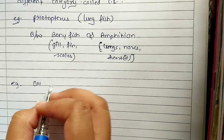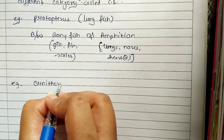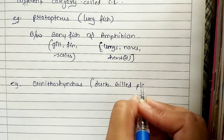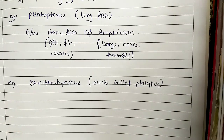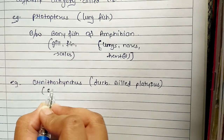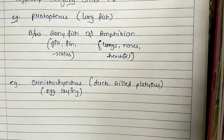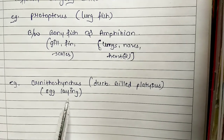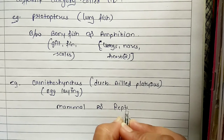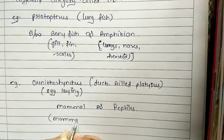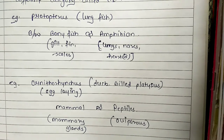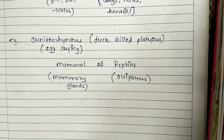Second example: Duck-billed Platypus — Ornithorhynchus. It is a mammal. Duck-billed Platypus is oviparous. This is a connecting link between mammals and reptiles. It has mammary glands, which is why it is kept with mammals.